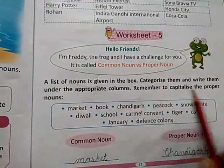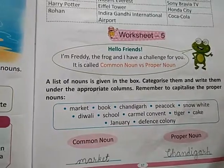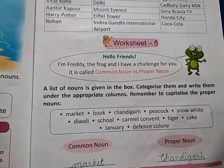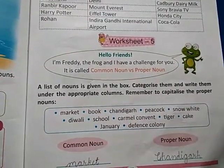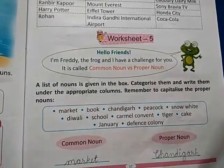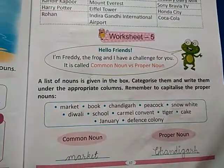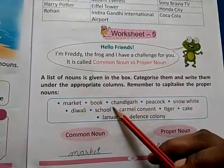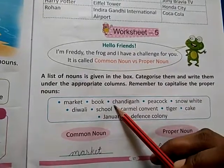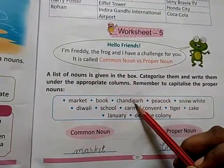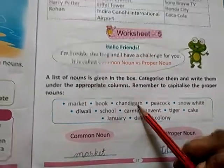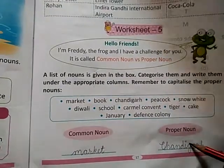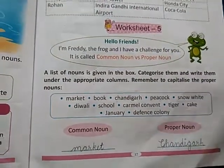Aapko kya karna hai? Categorize them and write them under the appropriate column. Remember to capitalize the proper noun — proper noun ko capitalize bhi karna hai. Kyunki inhone proper noun ko capitalize nahi kiya hua hai. Jaise Chandigarh — name of place hai, proper noun hai — to aap khud se usse capitalize kar denge.